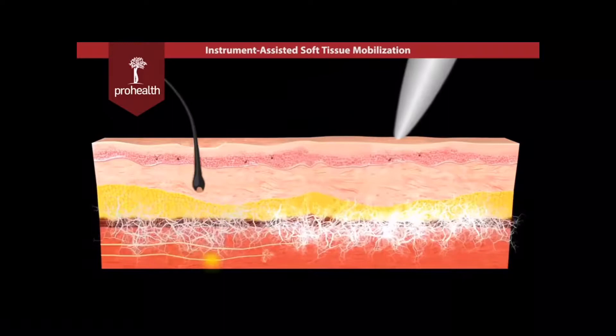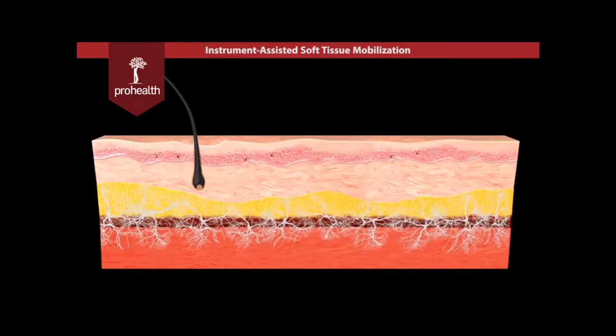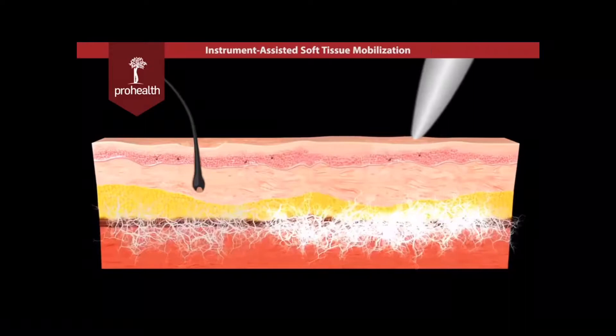IASTM also promotes the movement of blood through capillary beds and stimulation of neurologic pathways and reflexes that affect muscle tone and mobility. Mechanical stimulation in conjunction with increased local blood flow and neurologic stimulation promotes optimal healing and function.